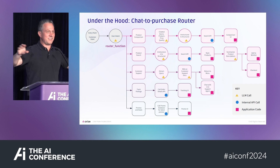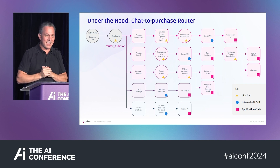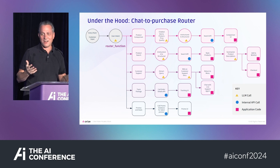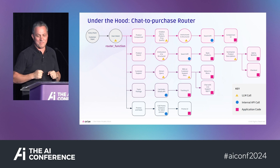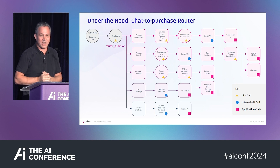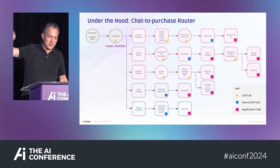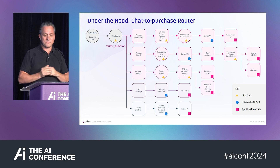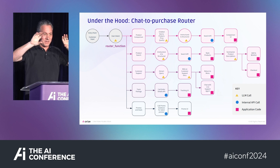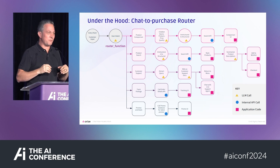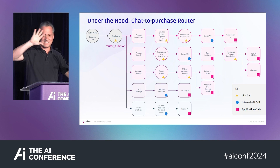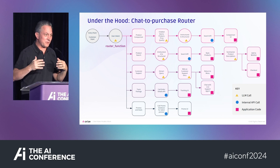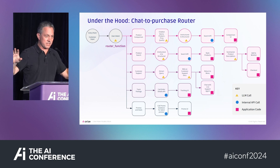It can get more complicated. This is an example of a real production system. There's a router at the front, a branch to decide what to do — this is a chat-to-purchase scenario. The yellow triangles mean LLM calls. Some branches don't have an LLM call; some have two LLM calls underneath. This is what architectures look like in production: a router-skill architecture with a loop on it.